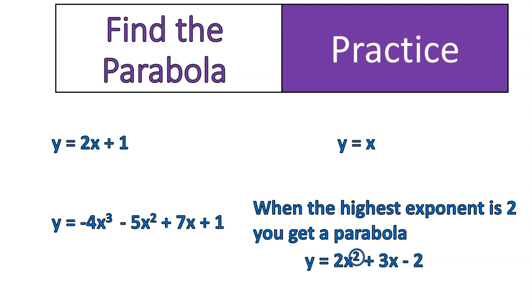This one is right here. It is the highest exponent that is a 2. In the other one, you see y to the power, or y equals negative 4x to the power of 3. If it has x to the power of 3, it is no longer a parabola. Okay, so because it has a higher power.